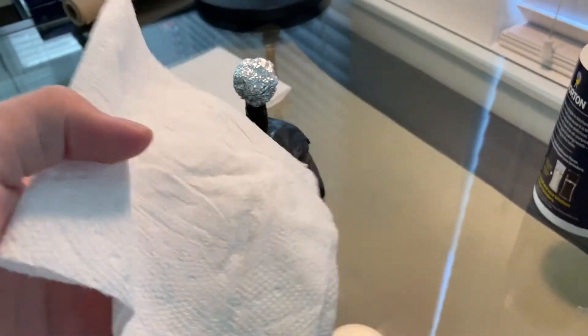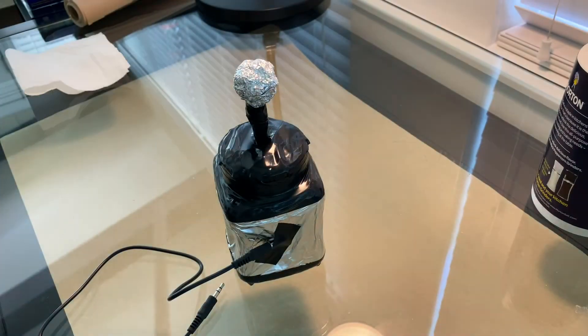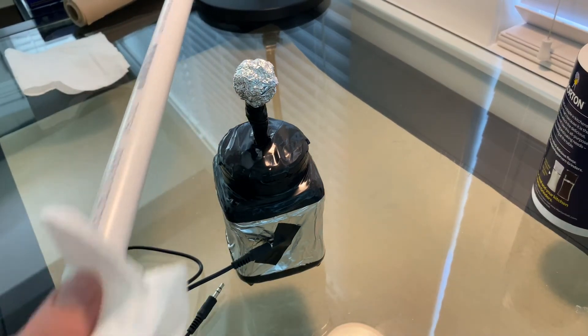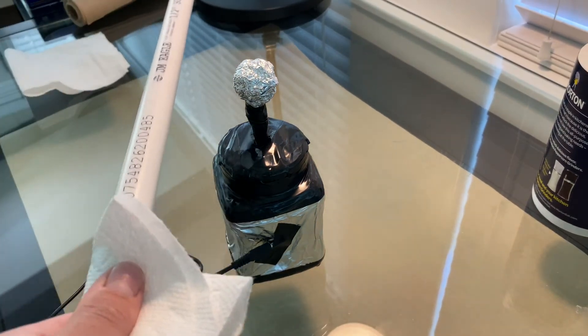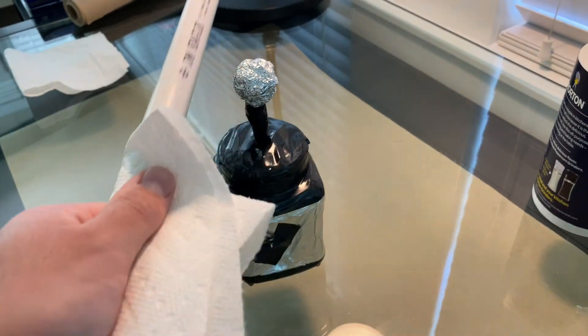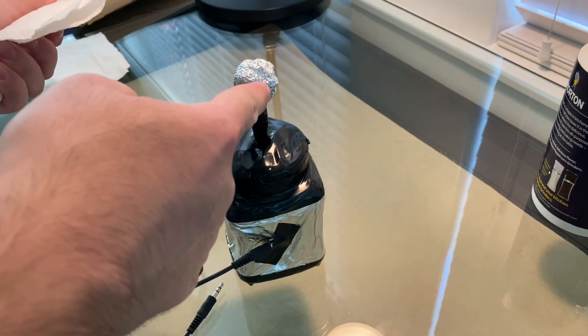So you want to take a paper towel just like this one, fold it in half. Now you're going to take your PVC pipe and you're going to rub it back and forth. You're going to take your PVC pipe, rub it back and forth and you want to bring it as close to the tip as possible.